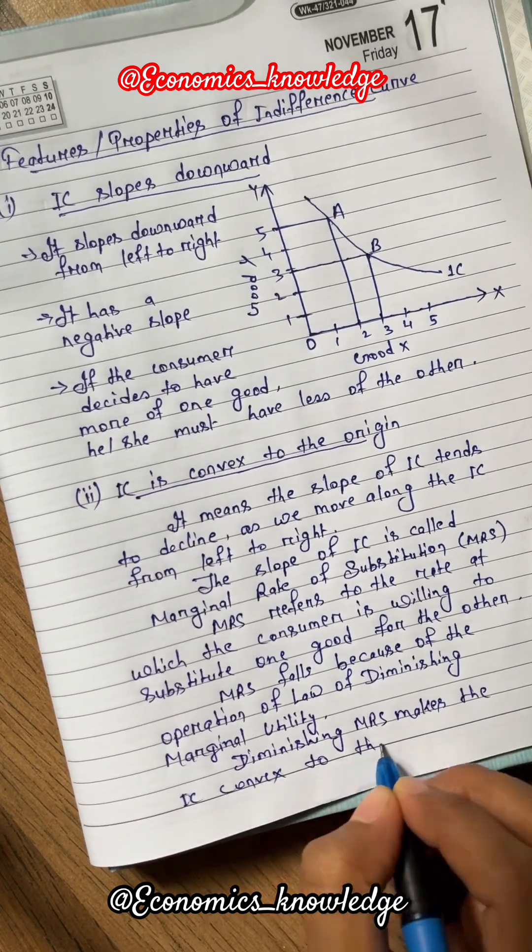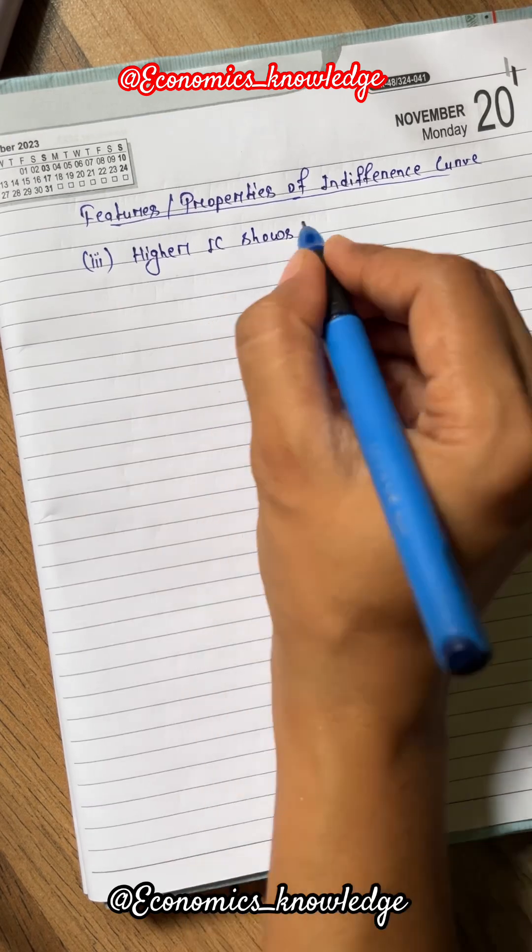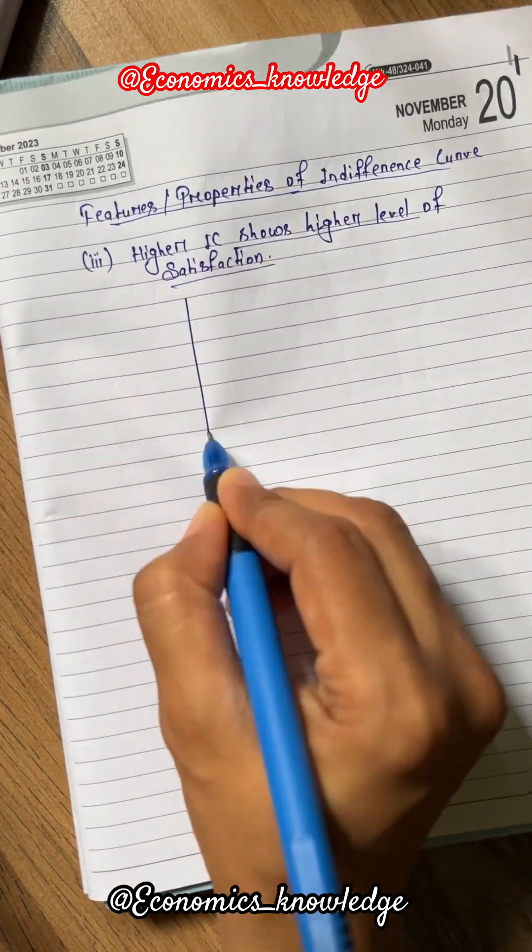Diminishing MRS makes the IC curve convex to the origin. The third feature of indifference curve is that higher IC shows higher level of satisfaction.